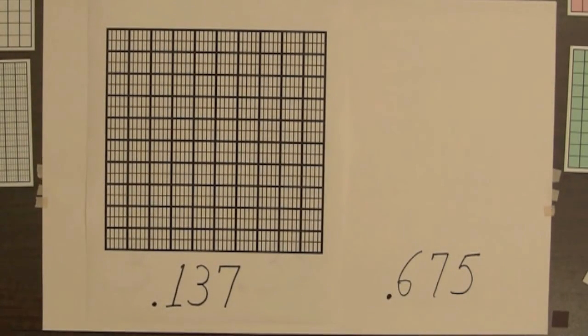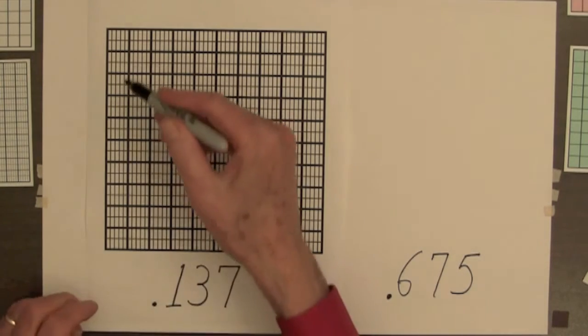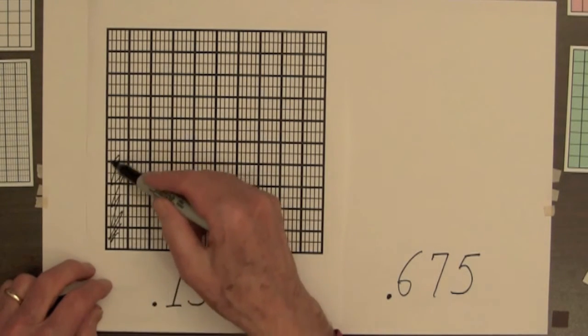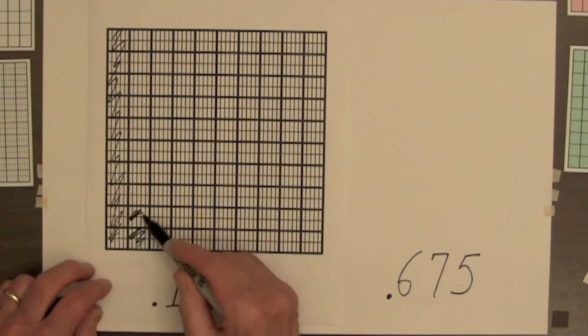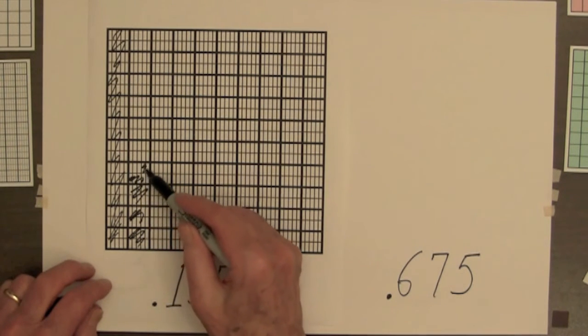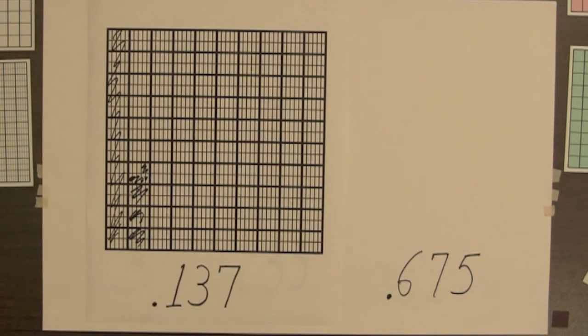For this square with 1,000 parts, remember there are 100 tiny parts in this first column. So there's 100. And then there's 10 in each block here: 10, 20, 30, 35, 37. So that is the shading for the square for 137 thousandths.